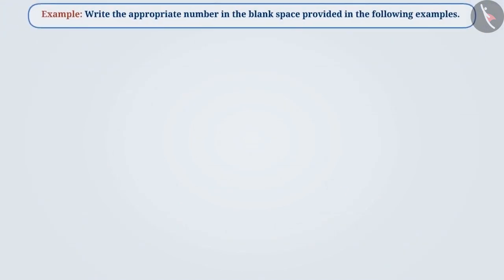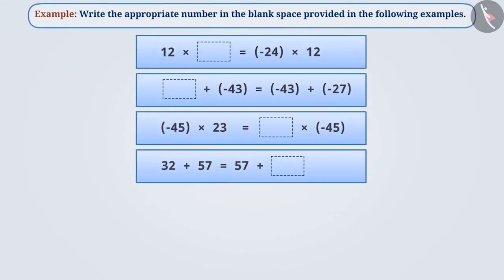Next example. Write the appropriate number in the blank space provided in the following examples. As you can see, the result of multiplication of 12 and the blank space is equal to the result of multiplication of minus 24 and 12.